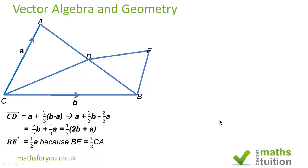Vector BE, we know that BE is half of CA so BE is half a. Moving on.